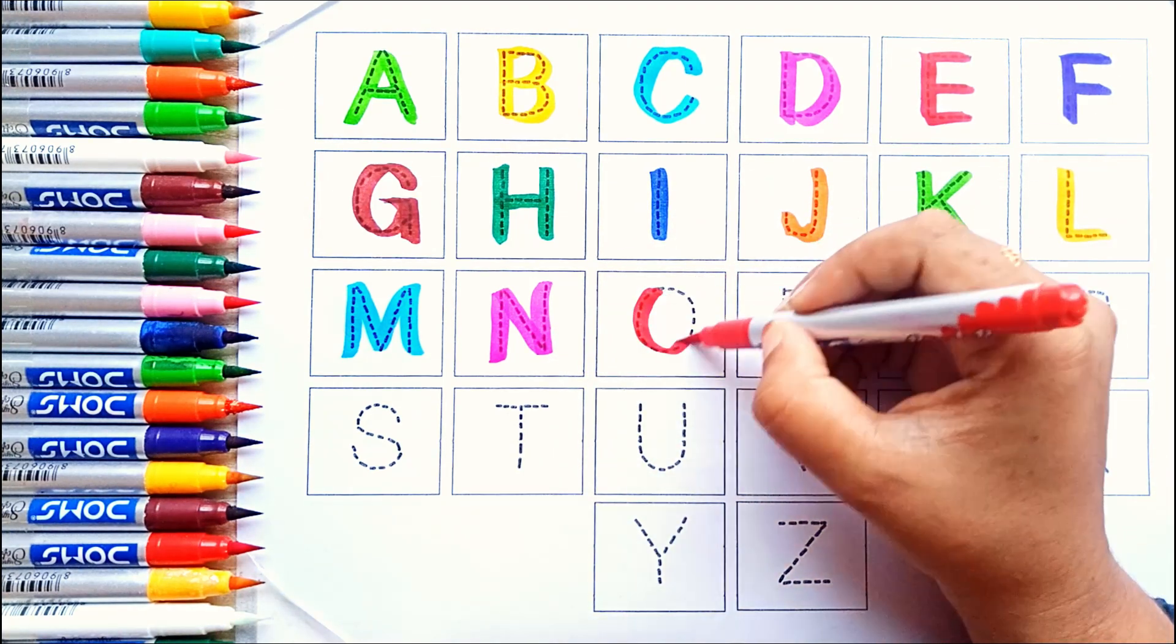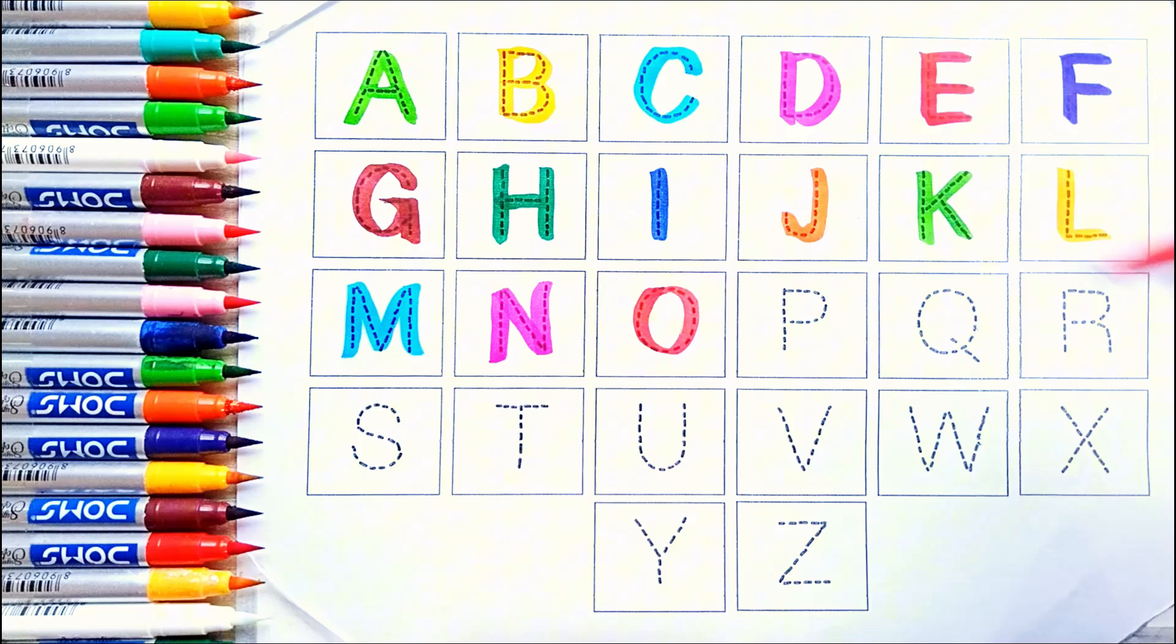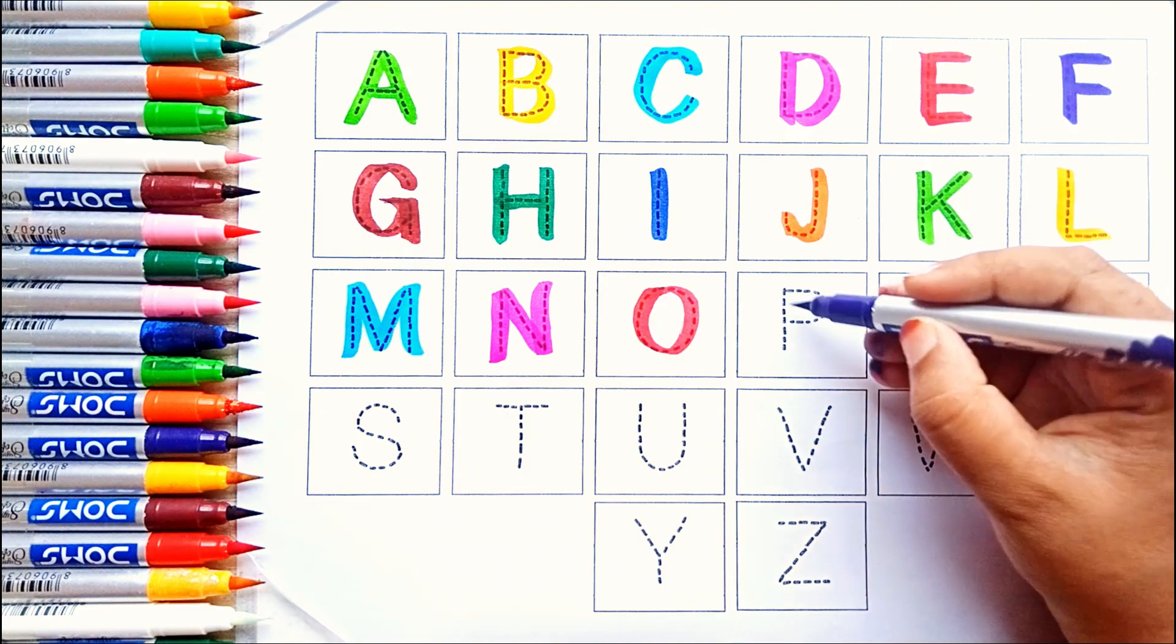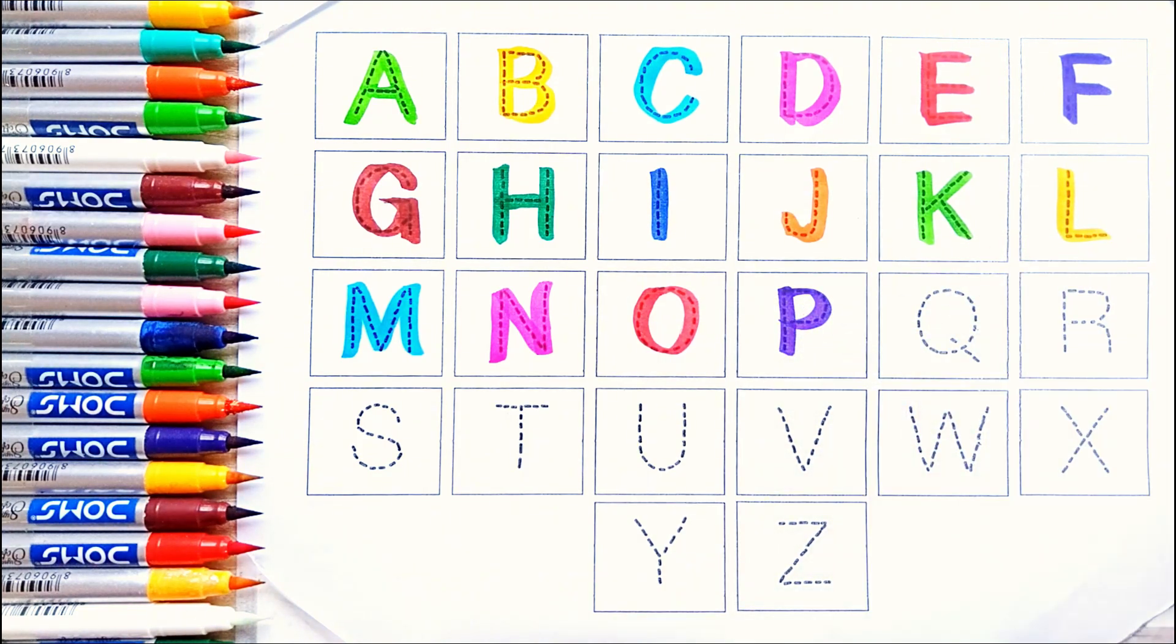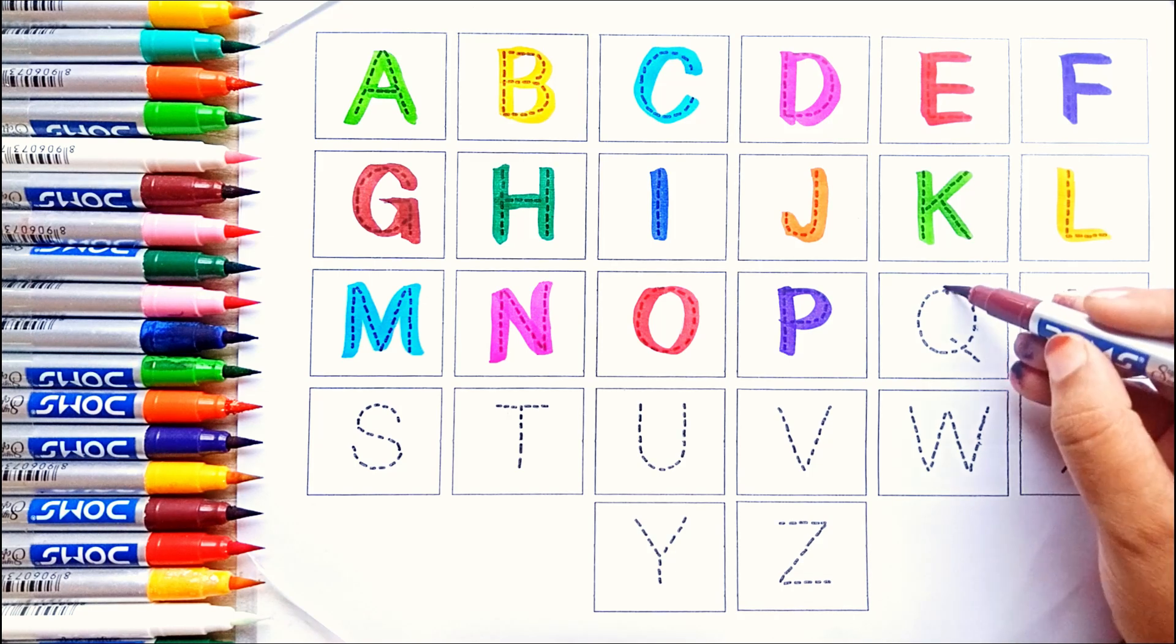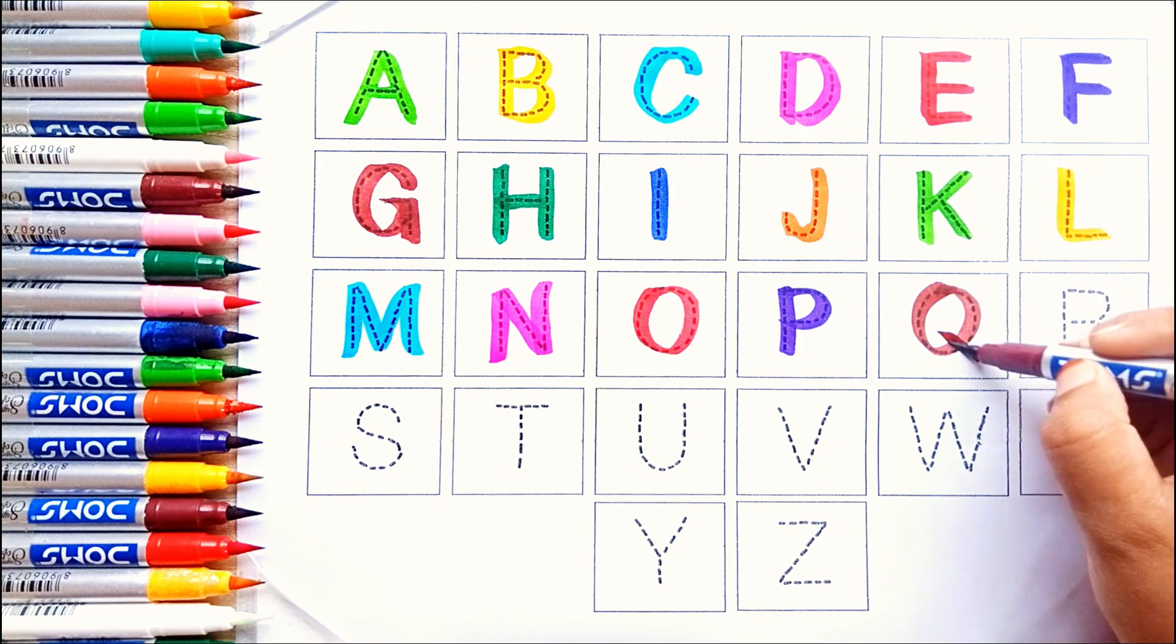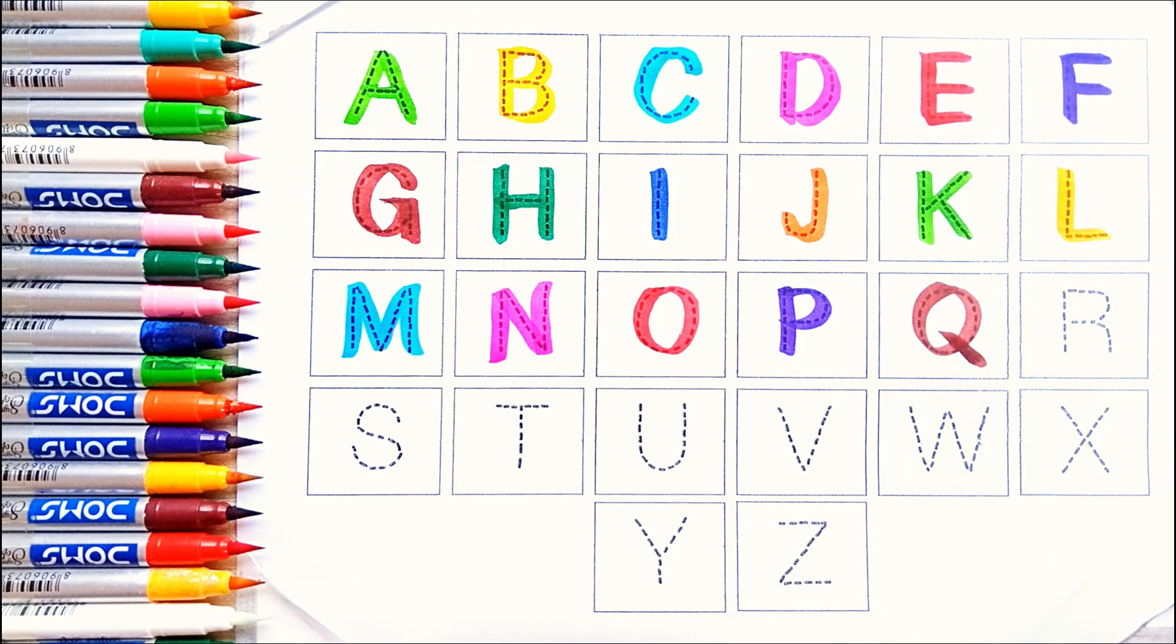Red color. O, for ox. White color. P, for peacock. Brown color. Q, for queen. Green color. R, for red.